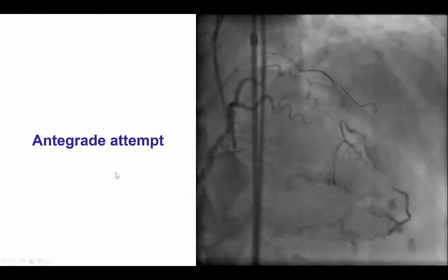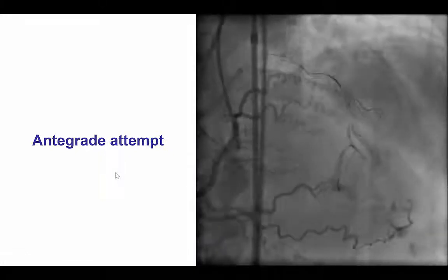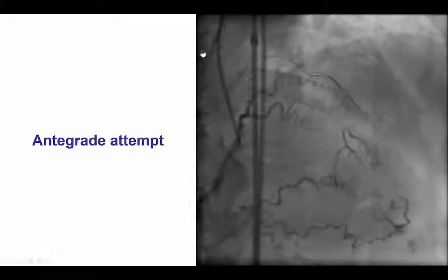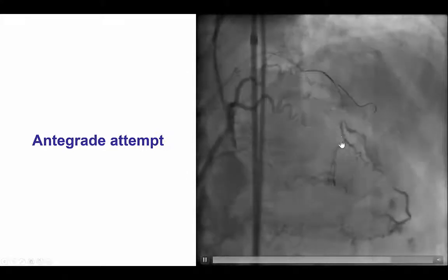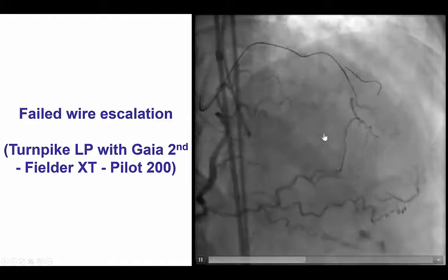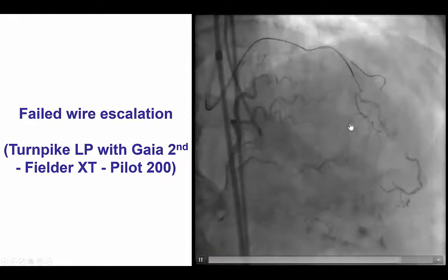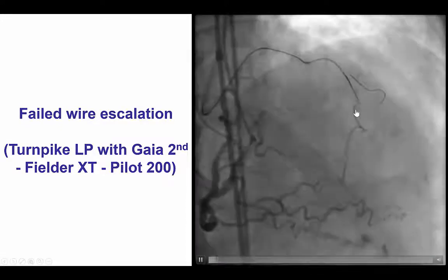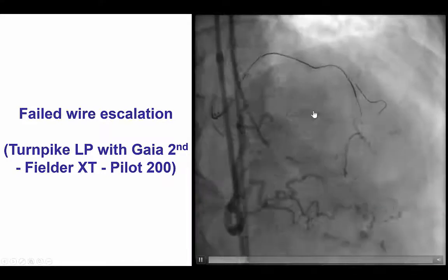We did intravascular ultrasound and clarified the location of the proximal cap, and then we were able to perform antegrade wire escalation with the Fielder XT guidewire that seemed to be advancing in the right plane — there is movement of the wire in sync with the mid-LAD. However, despite multiple efforts, we were unable to advance a variety of wires such as the Gaia 2nd, Fielder XT, and Pilot 200 further down. There was likely tortuosity and calcification and the wire was stuck.